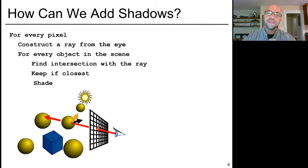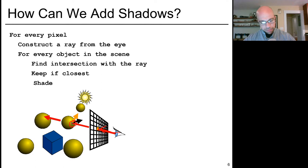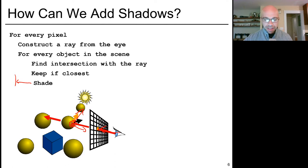Let's talk about how to add shadows to our ray traced scene. Here on the slide is the basic ray casting algorithm again. In ray casting, we send out a ray from our eye and find the first object that ray runs into, and then shade the pixel. For Lambertian shading, we look at the normal vector to the surface and the vector to the light source, take their dot product, and use that for shading. But this computation never checks whether there actually exists a path from the light source to the surface — that is, whether some other object is blocking the light.